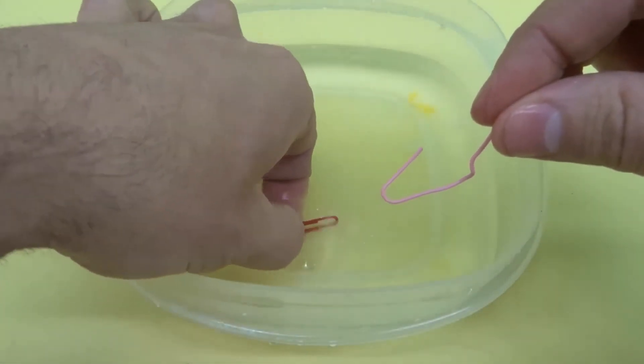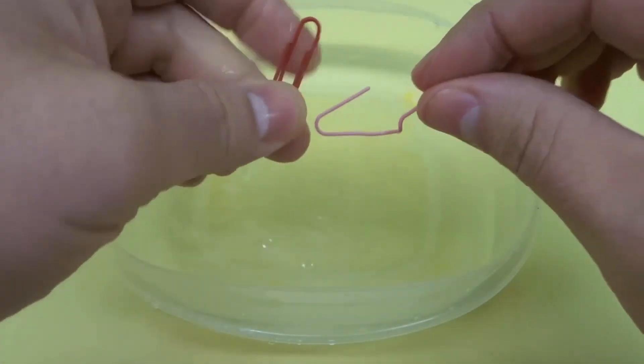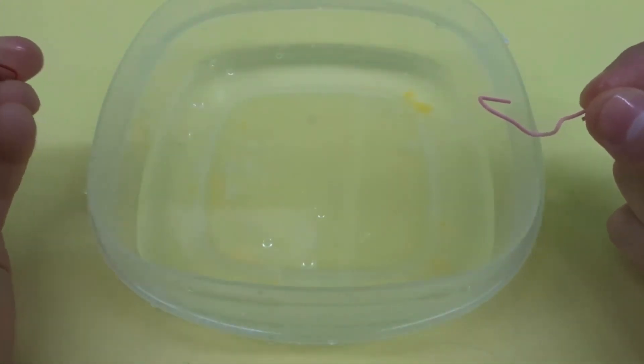And what you can do, just as I said before, is just use another paperclip and just slowly lower it into the water just as I've shown you. And that's it.